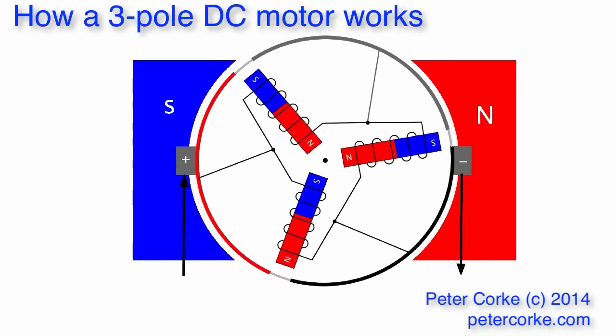We're going to stop the action here because a very interesting event is about to happen. The brush is going to move from one commutator segment to the other and this is a process known as commutation. It's important to notice that this south pole on the rotor is now very close to the north pole on the stator and this is about as good as it gets for a magnet. So it's not going to want to budge any further and this is a bit of a problem.